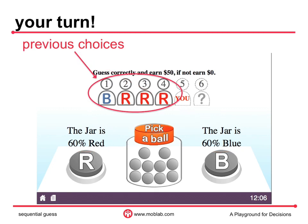As each group member submits a guess, you see that person's guess. In this case, the person choosing first guessed that the jar contained mostly blue, and then the next three guessed that the jar contained mostly red. Importantly, while you see the guesses of those before you, you do not learn what color ball each saw.